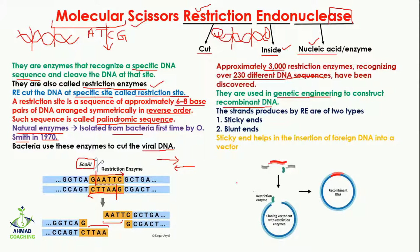The endonucleases are used in genetic engineering to construct recombinant DNA. Recombinant DNA means you take DNA from two different sources — for example, one source is human and the other is bacteria — and combine them. But you first need to cut the DNA from the rest, and that function is performed by the restriction endonucleases. They produce two types of cuts: sticky ends and blunt ends. EcoRI produces sticky ends.